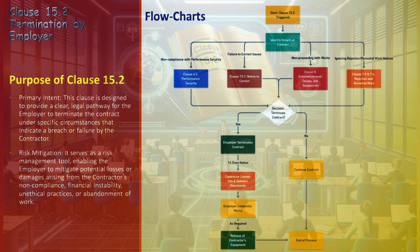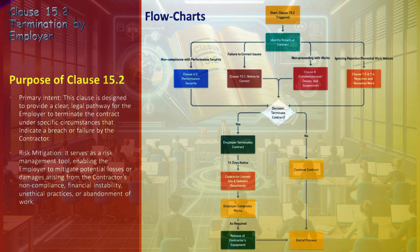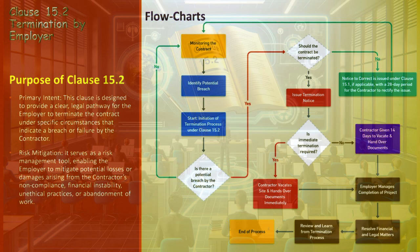The employer identifies the specific breach, which could include non-compliance with performance security, failure to correct issues, not proceeding with works, or neglecting rejection and remedial work notices. The employer then makes a critical decision on whether to terminate the contract based on the identified breach, within a reasonable timeframe ensuring due diligence and fairness. If the decision is to terminate, a 14-day notice is typically issued, after which the contractor is required to leave the site and deliver all relevant documents. If the decision is not to terminate, the contract continues as per the agreed terms.